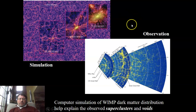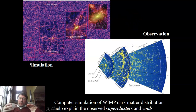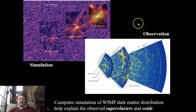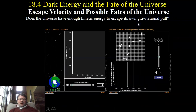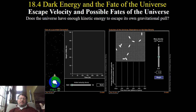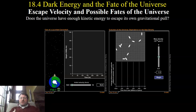Those empty regions are called voids. Where galaxies are all clumped together, those are called superclusters. Now in the last section of Chapter 18, we start to talk not about dark matter, but about dark energy and the fate of the universe. As an introduction, let's review a concept we've seen before this semester: the concept of escape velocity.